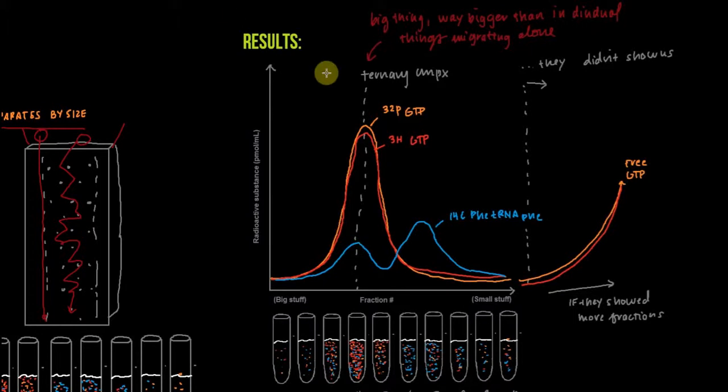So here are the results. On the y-axis, we have the concentration of the radioactive substance, in picomoles per ml. On the x-axis, we have fractions, where small fraction numbers represent big stuff, and large fraction numbers represent small stuff coming off the column. We see kind of two dual peaks happening here, with both 32P GTP and tritiated GTP, as well as this 14C-labeled phenylalanine tRNA phenylalanine.